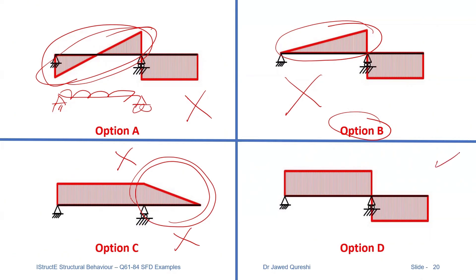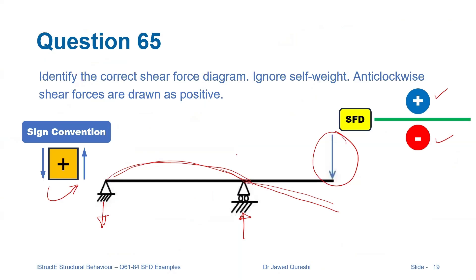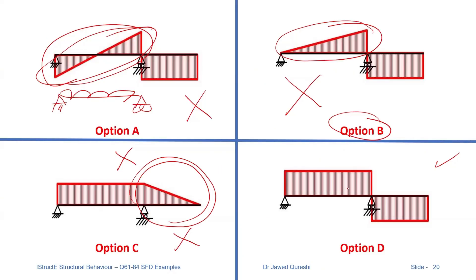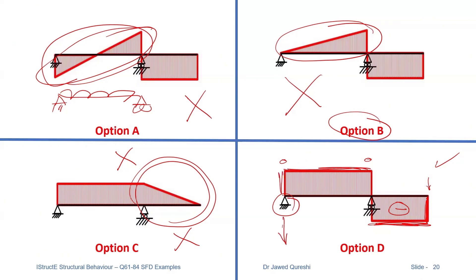Going back to check the direction of reactions: the load goes down, then there's an upward reaction at the pin support, then a downward reaction. The diagram first goes down (negative side), remains straight with nothing in between, then goes up at the reaction point, stays straight to the next point, and then the downward reaction brings it back down. This confirms option D.